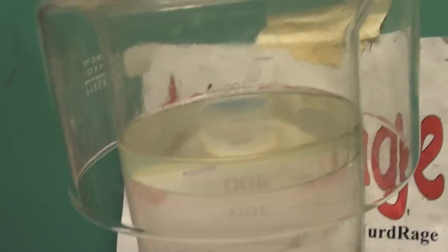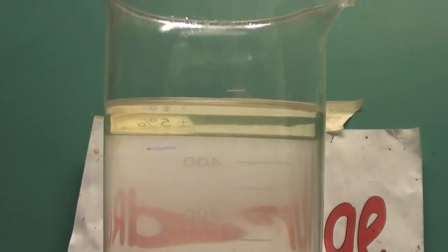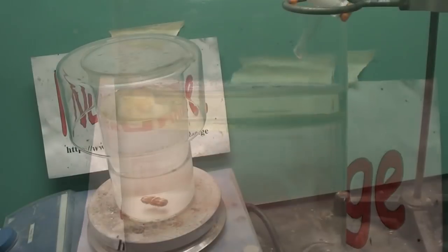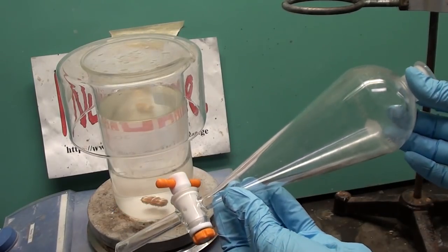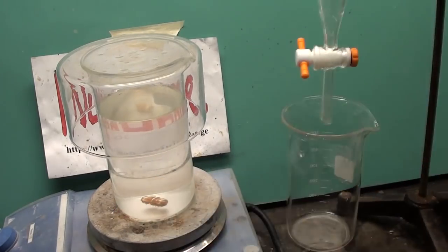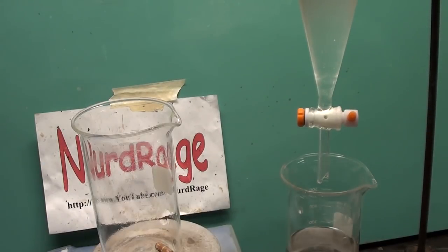Here we are. You can see the layer of methyl ethyl ketazine floating at the top like oil. I'm using a separatory funnel to separate the two layers as the ketazine is all we want. If you don't have one of these you'll have to improvise or very carefully decant the ketazine.